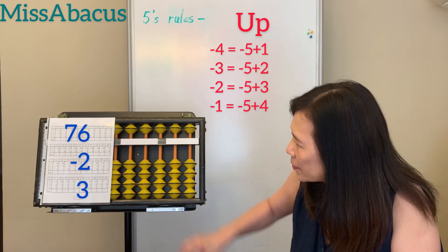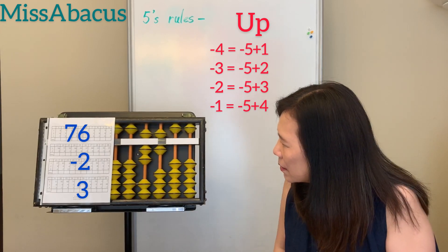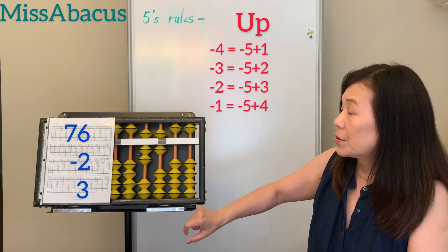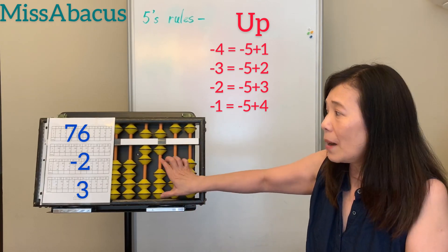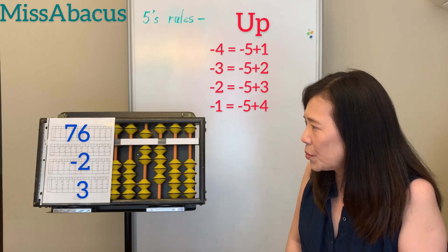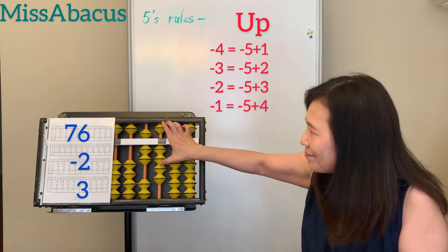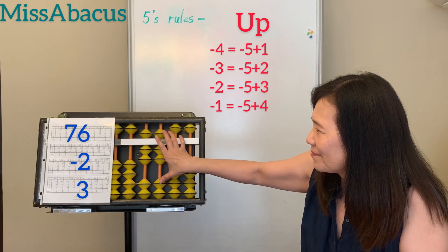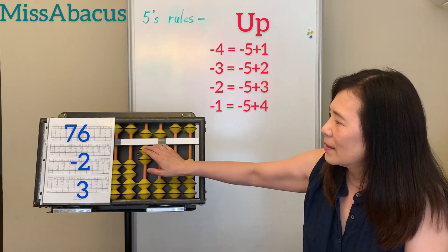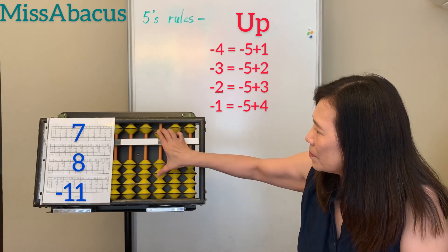Number 34: 76 minus 2. One left — use the 5, so minus 2 is up 5, up 3. Then 7 plus 3: down 5, down 2. Answer: 77.